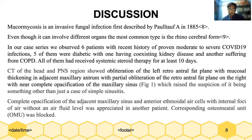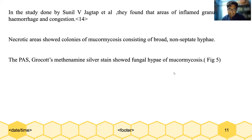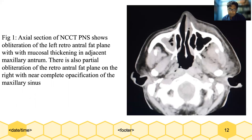CT of the head and sinuses showed obliteration of the left retroantral plane with mucosal thickening in the adjacent maxillary antrum and partial obliteration of the retroantral plane on the right, with near-complete opacification of the maxillary sinus, which raised the suspicion of it being something other than a case of simple sinusitis. This figure shows obliteration of the left retroantral plane, partially on the right, with mucosal thickening in both maxillary sinuses.